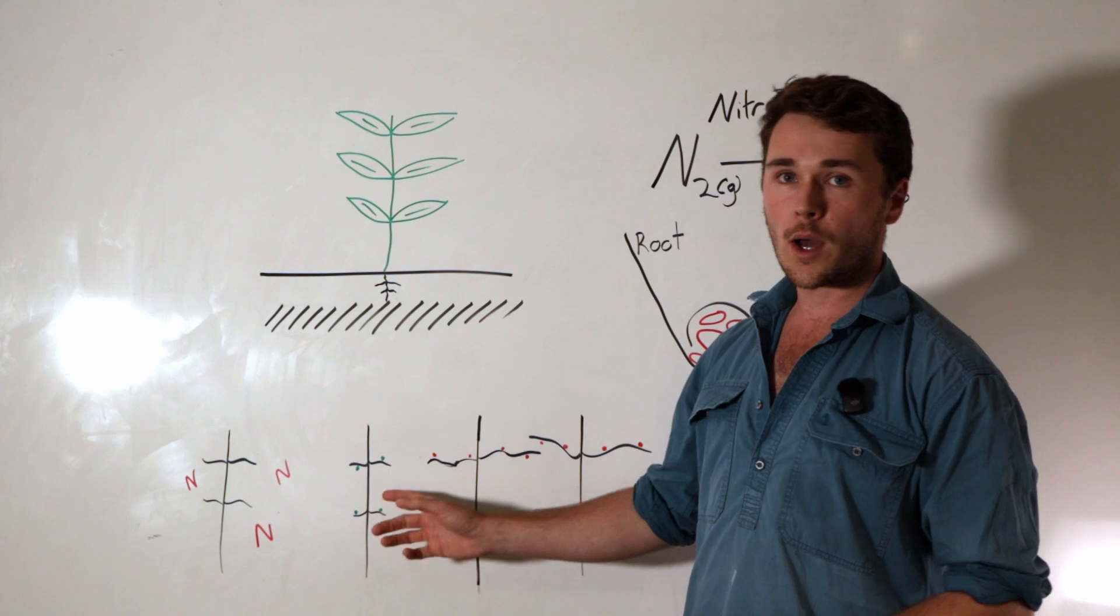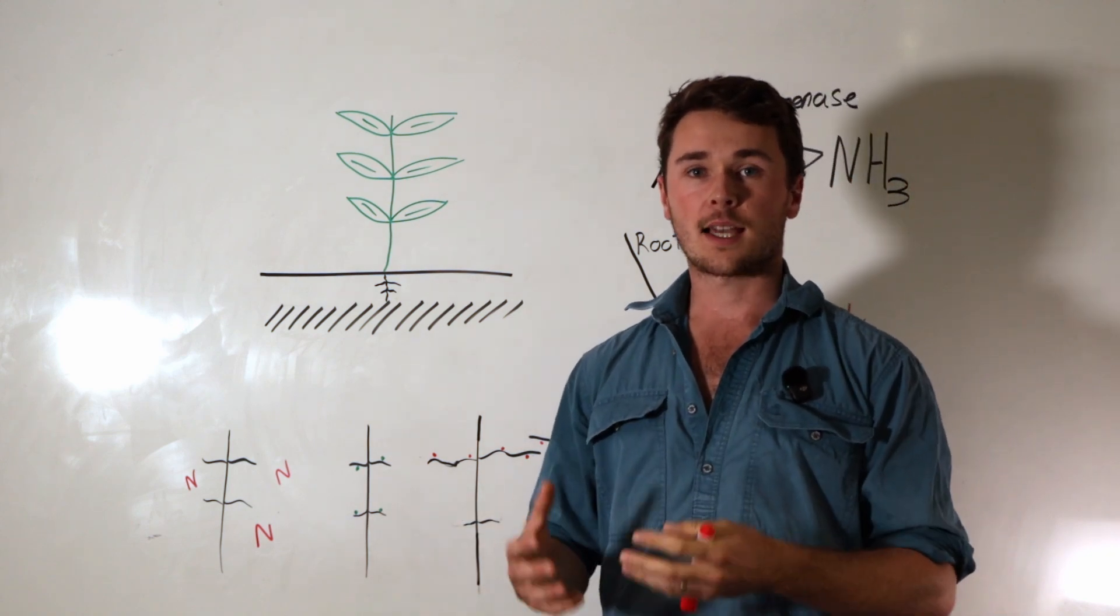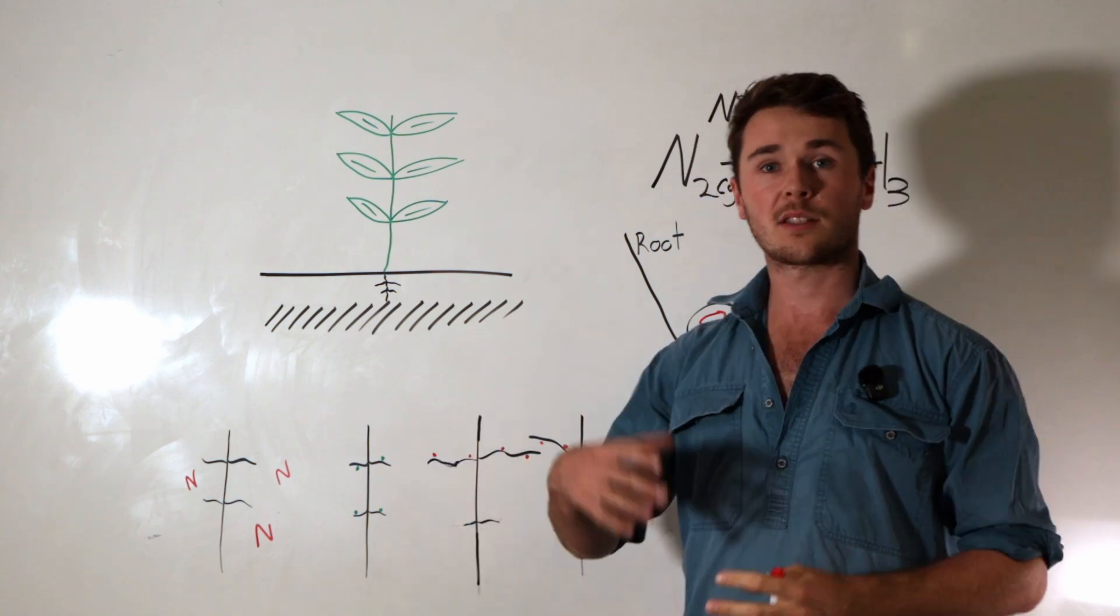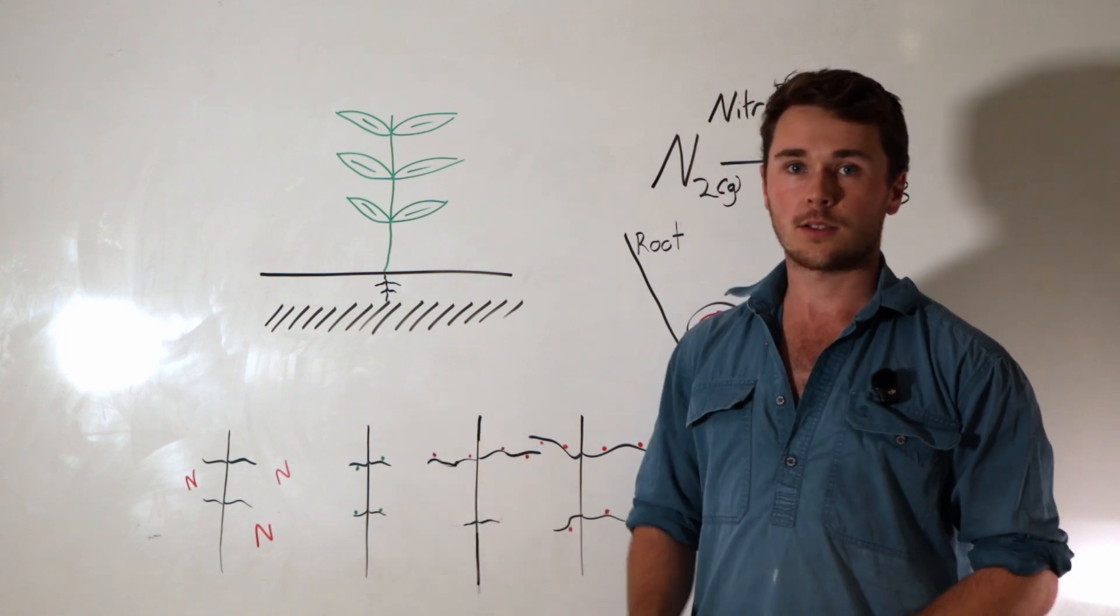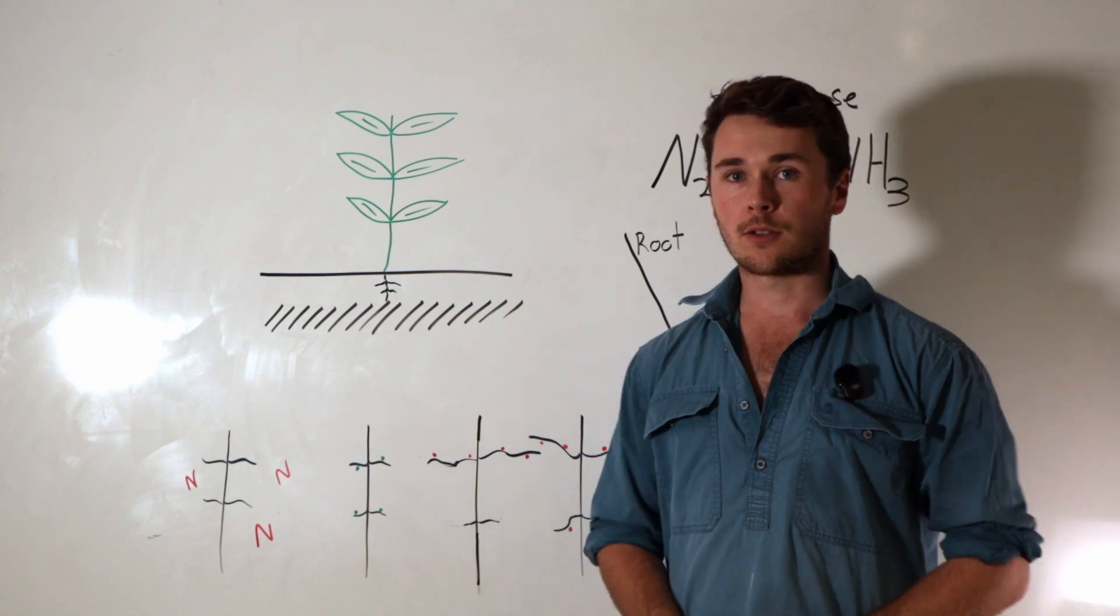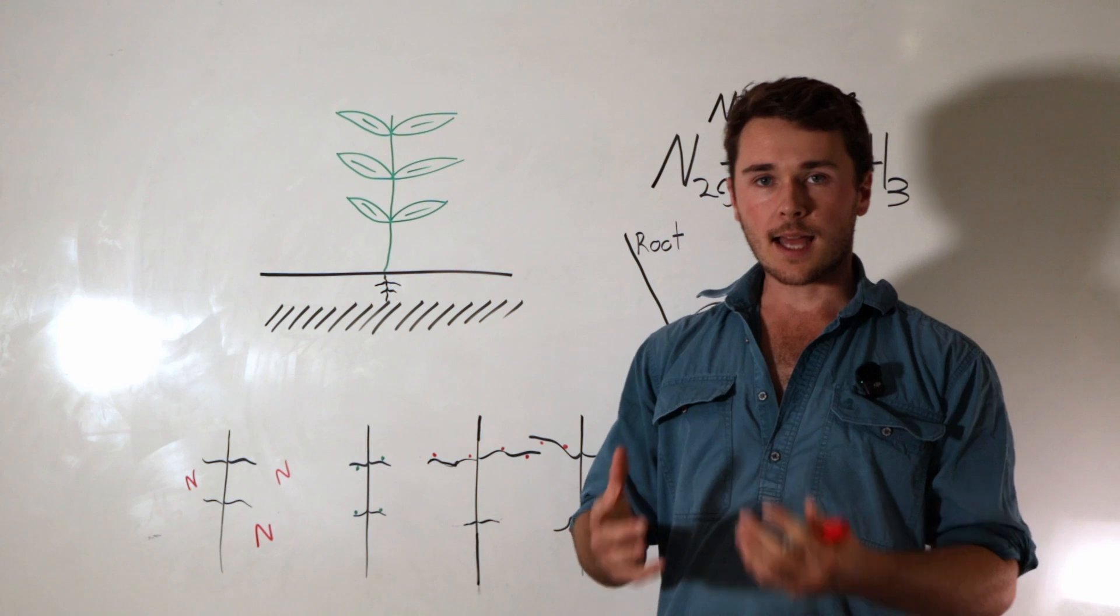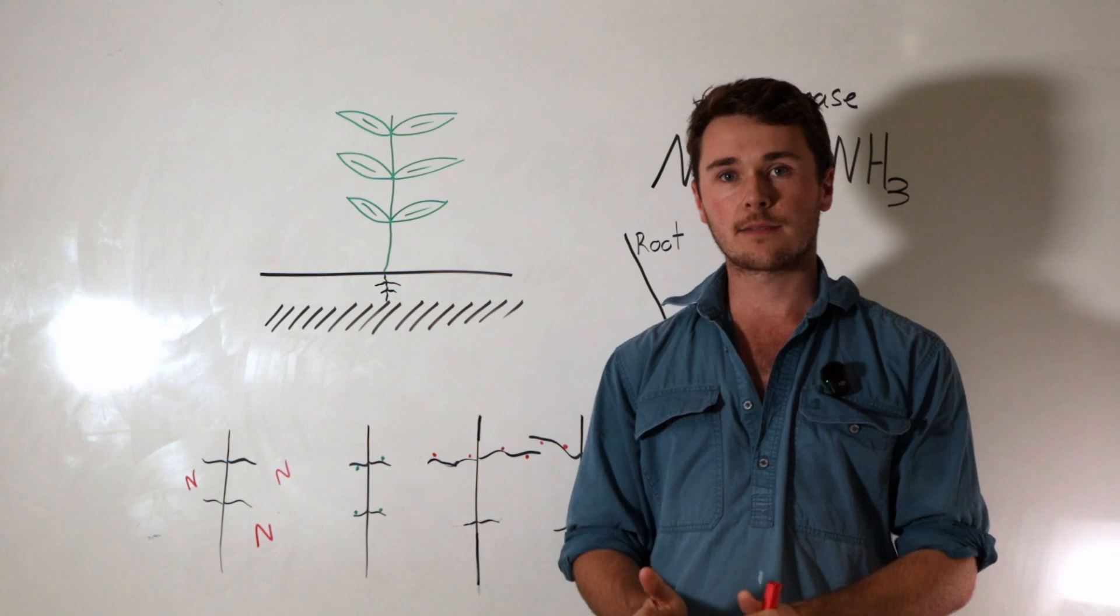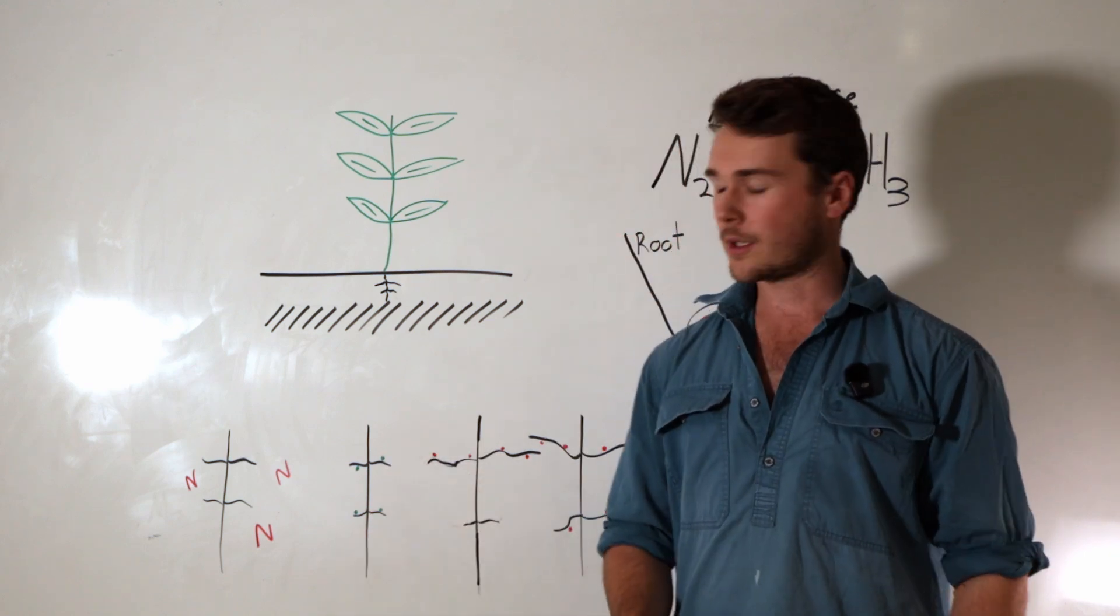When the nodule is either white, green or brown, it means that the leg hemoglobin aren't there. That could be because there's the wrong rhizobia bacteria for the specific legume species. It could also mean that you don't have any iron in your soil or the plant doesn't have any iron available to itself. It could also be a nutritional problem as well. So overall, it means that it started to nodulate, but the plants or the rhizobia bacteria aren't actively fixing nitrogen. So it's pretty much useless. It's not really working.